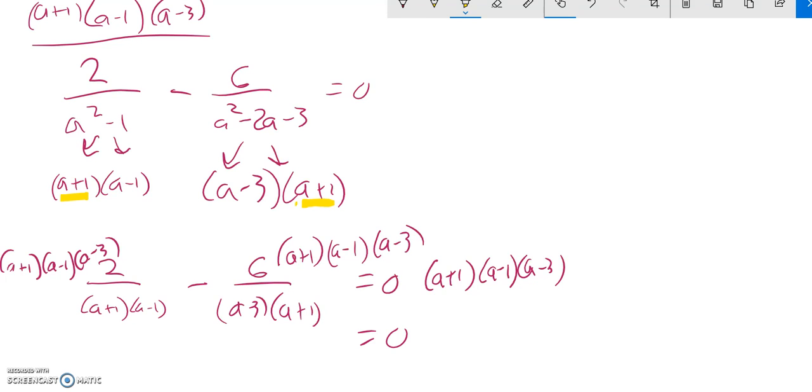And then here, let me do some of the division. a plus 1, that divides out to a 1, that divides out to a 1. So what's left here is 2 times a minus 3, and that's minus. And then over here, the a minus 3s divide out to a 1, the a plus 1s divide out. So now I have minus 6 times a minus 1.